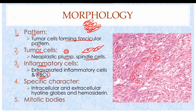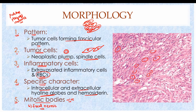These red blood cells typically give the reddish color to patches, plaques, and nodules. Fourth, a specific character of Kaposi Sarcoma is the presence of intracellular as well as extracellular hyaline globes, along with hemosiderin often present in inflammatory cells such as macrophages. Fifth, mitotic bodies are always present, as is characteristic of a malignant tumor. Sixth, although focal necrosis is a hallmark of malignancy, in this case necrosis is absent because these tumors are well supplied with blood.